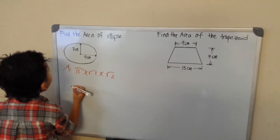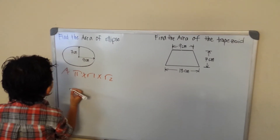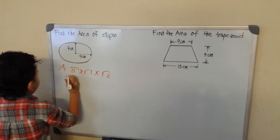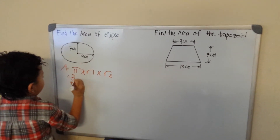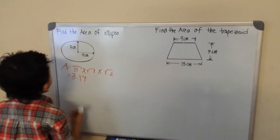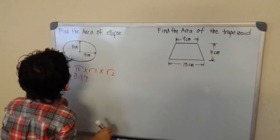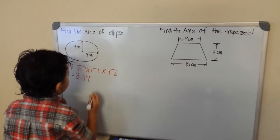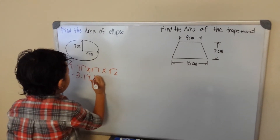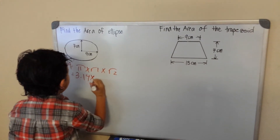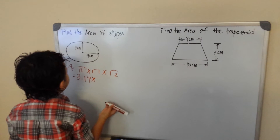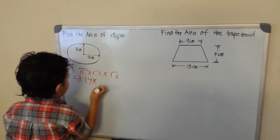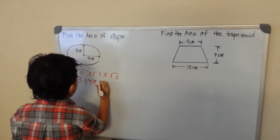Our pi is going to be 3.14. And then, what's our r1? Our r1 is 9dm.